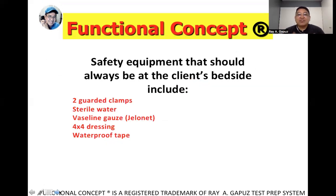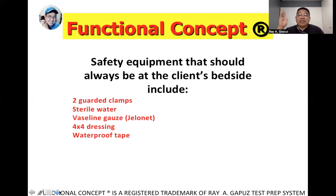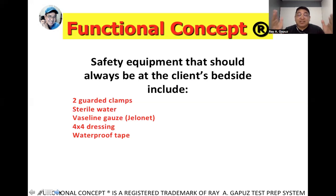Safety equipment that should always be at the client's bedside includes two padded clamps — in case of an air leak in the system — and sterile Vaseline-impregnated gauze. If the client accidentally pulls out the chest tube due to confusion, you use the Vaseline gauze to cover the open wound so that air will not enter the thorax and compress the lungs. You also need 4x4 dressing and waterproof tape.